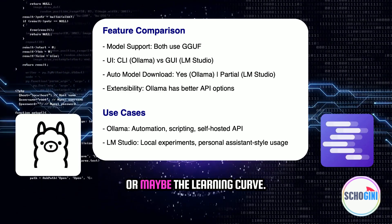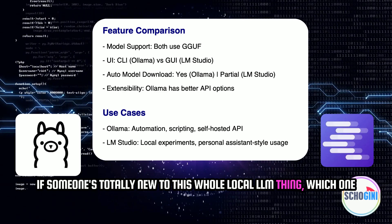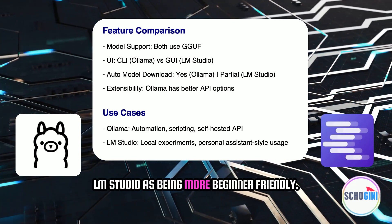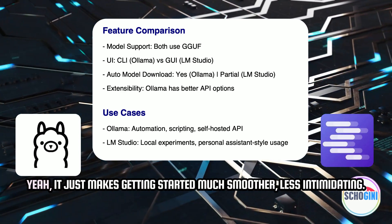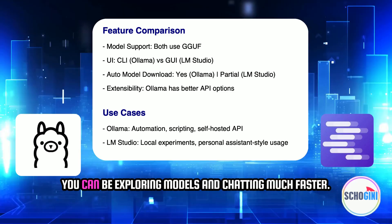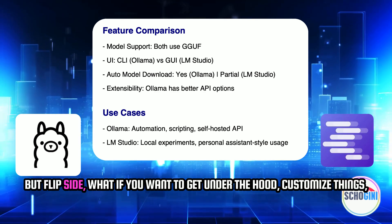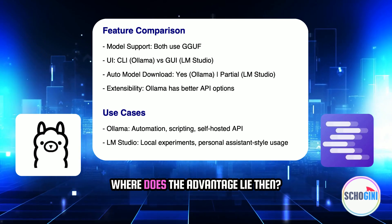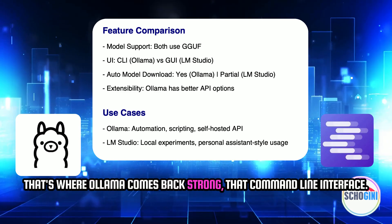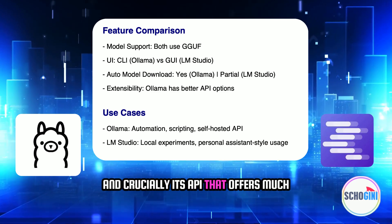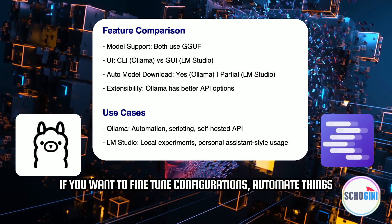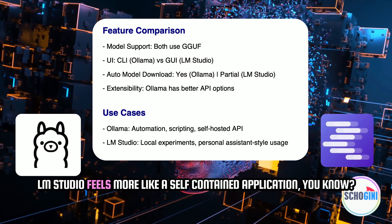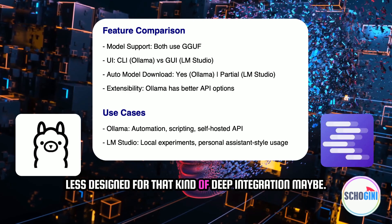Linked to that is ease of use and the learning curve. If someone's totally new to local LLMs, LM Studio is generally more beginner friendly — that visual interface and integrated tools make getting started much smoother and less intimidating. But if you want to get under the hood, customize things, and integrate deeply into other systems, that's where Ollama comes back strong. That command line interface and crucially its API offer much greater flexibility and more granular control — fine-tuning configurations, automating with scripts, building custom integrations. LM Studio feels more like a self-contained application, less designed for that kind of deep integration.